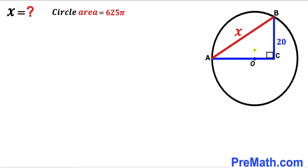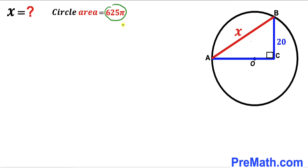Welcome to pre-math. In this video we have a right triangle ABC fully inscribed in a circle with center O, such that one side length of this triangle is 20 units. The hypotenuse of this triangle is represented by X, and the area of this circle has been given as 625π square units. Our task is to find the value of X — the length of hypotenuse AB.